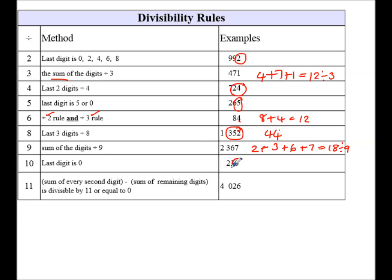Divisibility by 10, the last digit has to be a 0. 11 is quite a tricky one because it says the sum of every second digit. So 4 plus 2 is 6, so the sum of every second digit is 6. The sum of the remaining digits, 0 plus 6 is 6. So 6 minus 6 will give me 0. When I do the subtraction, it either has to equal 0 or be divisible by 11.